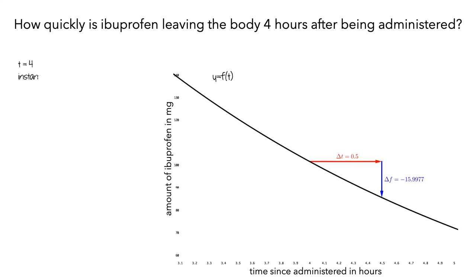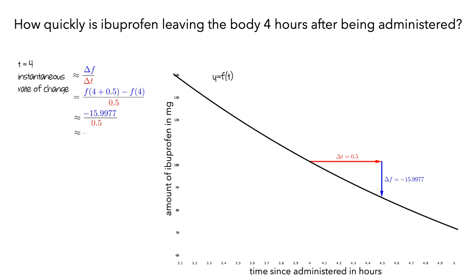At t = 4, the instantaneous rate of change is approximated by the average rate of change from 4 hours to 4.5 hours. The average rate of change is the difference between f evaluated at 4 + 0.5 hours and f, divided by 0.5. With a few more calculations, we see that over this interval of time, ibuprofen leaves the body at a rate of almost 32 milligrams per hour.